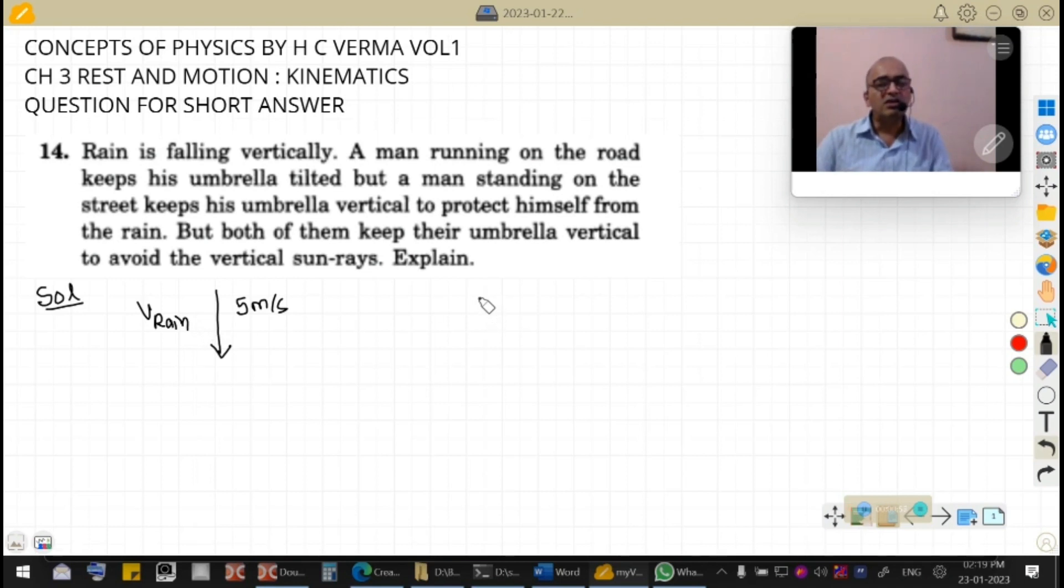Whereas sun rays are electromagnetic waves, and you all know electromagnetic waves move at the speed of light. That is, the velocity of sun rays is 3 × 10^8 meters per second.